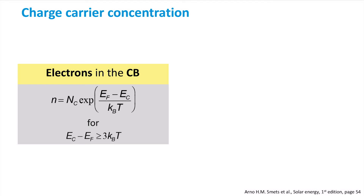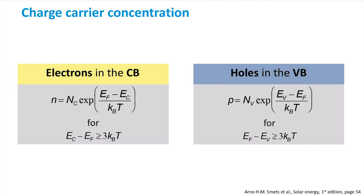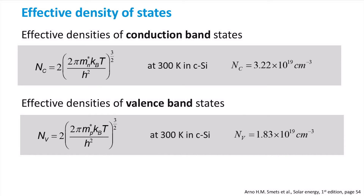If we use the Boltzmann approximation, we can calculate these concentrations. For electrons in the conduction band we get one expression, and for holes in the valence band we get another. There are two new parameters in these equations: Nc and Nv, called the effective densities of conduction and valence band states respectively. As you can notice, they are different from each other since the effective mass of electrons is different from the effective mass of holes.